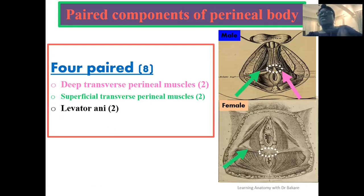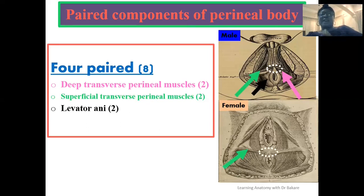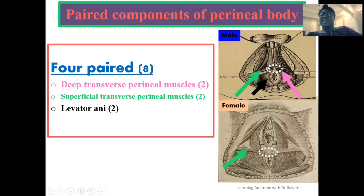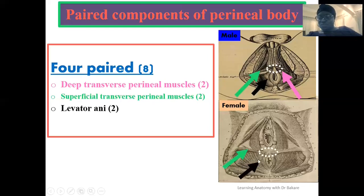The levator ani muscle is a group of muscles forming the floor of the pelvic cavity. There are two levator ani muscles — one on the right and one on the left. Fibers from the levator ani muscle, arrowed in black in both male and female perineum images, are also inserted onto the perineal body, contributing to its formation.